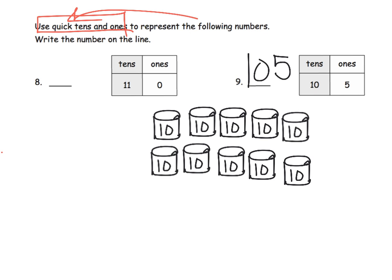And then we have 5 ones. So what would that look like? Well, 5 ones might look like 1, 2, 3, 4, 5. OK. And so if we wanted to, we could count them. We could count by tens. We could do 10, 20, 30, 40, 50, 60, 70, 80, 90, 100. 101, 102, 103, 104, 105. So there's our number. 105. 10 tens. 5 ones.